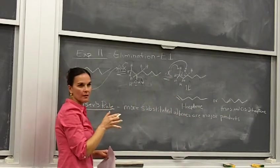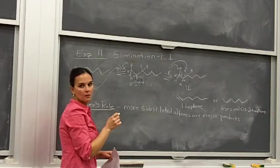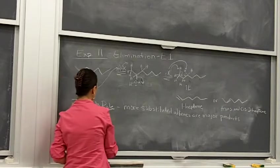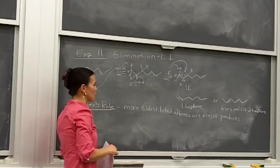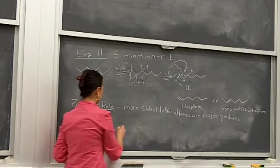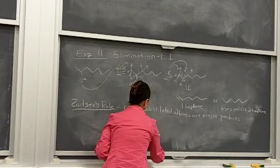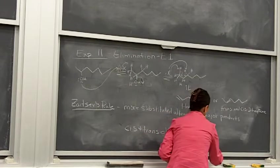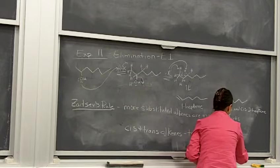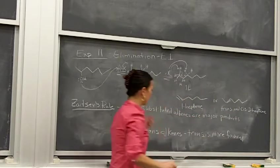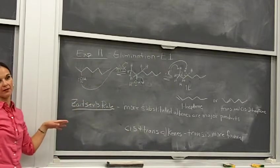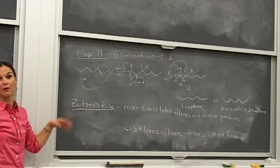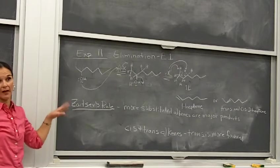Between 1-heptene and 2-heptene, 2-heptene is going to be more favored. Now, what about cis and trans alkenes? Trans alkenes will be favored more — that's not Zaitsev's rule, but it's an additional consideration. Trans is more favored. That doesn't mean you'll only form trans alkene; you're still going to have some cis in there — you'll just end up with more trans than cis.